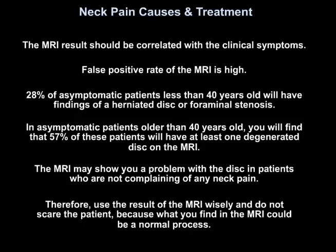The false positive rate of MRI is high. 28% of asymptomatic patients younger than 40 years old will have findings of a herniated disc or foraminal stenosis. In asymptomatic patients older than 40 years old, 57% will have at least one degenerated disc on MRI. Therefore, use the MRI results wisely and don't alarm the patient, because what you find could be a normal degenerative process.